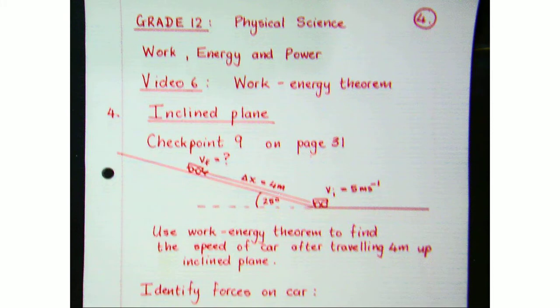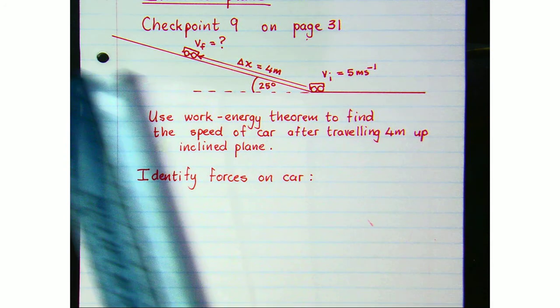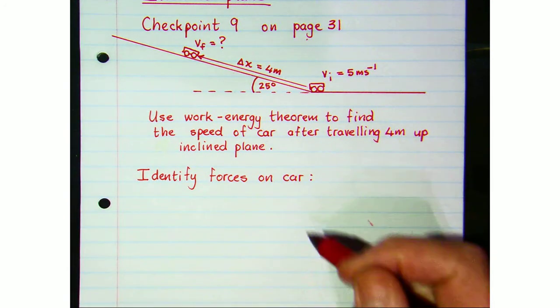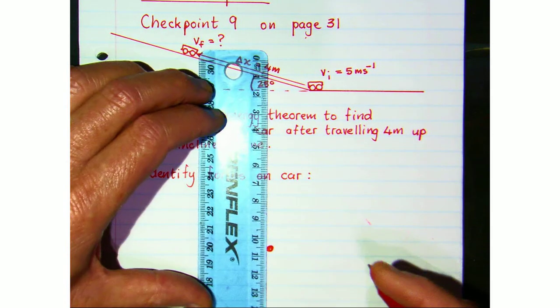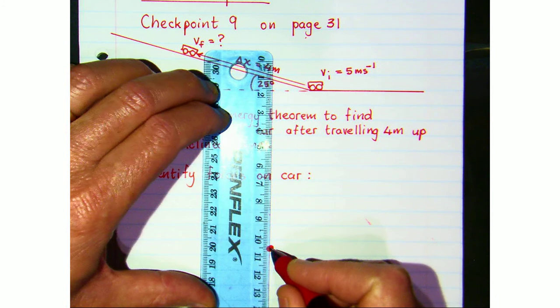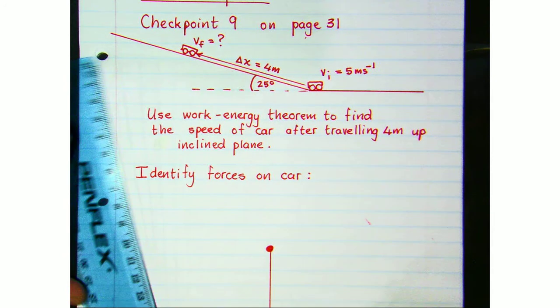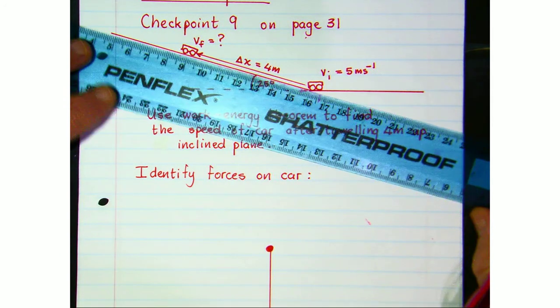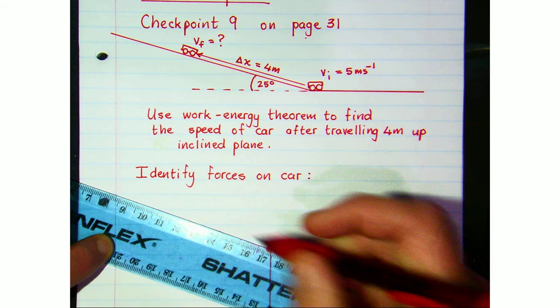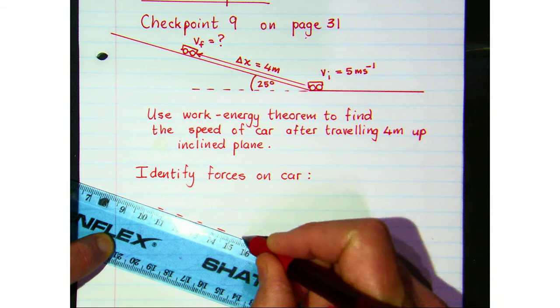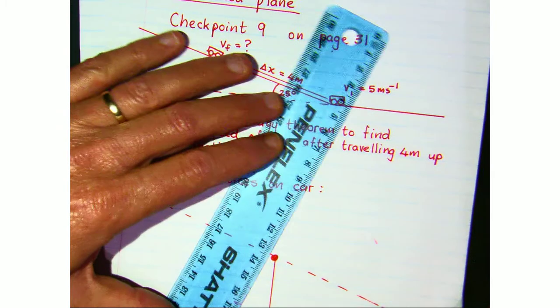Right, the first thing that you would have done is identify the forces acting on the car. So if we draw a force diagram, we've got the gravitational force that always acts straight down. Remember we have to draw in our Cartesian plane parallel to the plane. That's your x-axis and your y-axis is perpendicular to that plane.